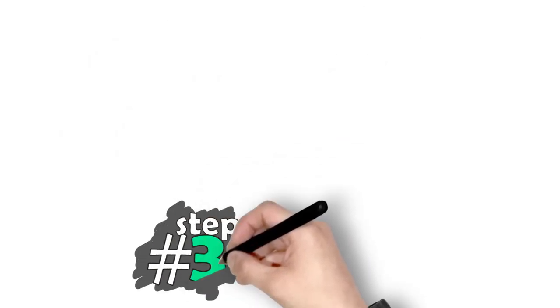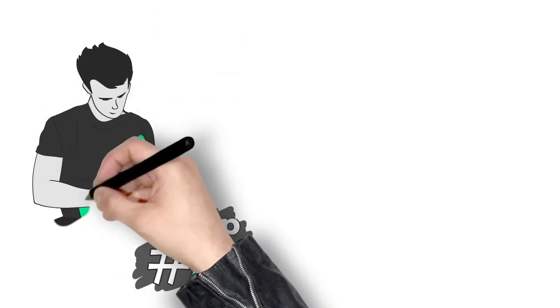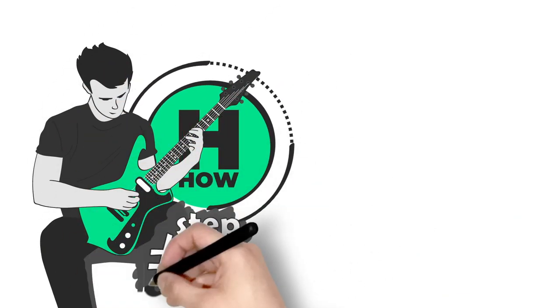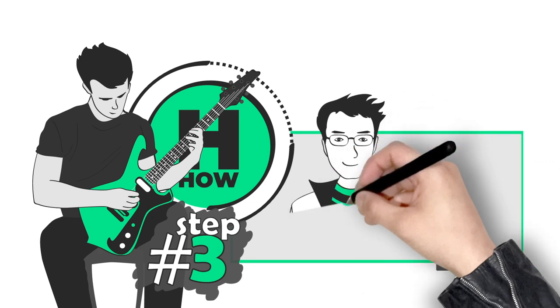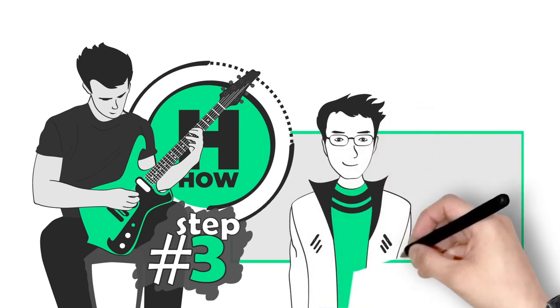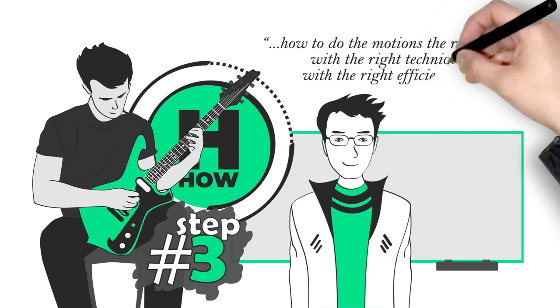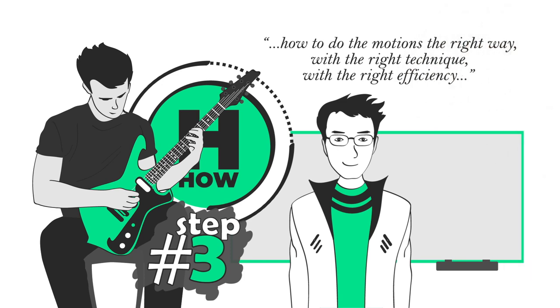So now let's move on to step three. Now that you know the motion to master, learn how to do the motion. And this is where the role of a good teacher comes in. A good teacher should be able to tell you exactly how to do the motion the right way, with the right technique, the right efficiency, so that you can do it cleanly and fast and accurately and make it feel effortless.